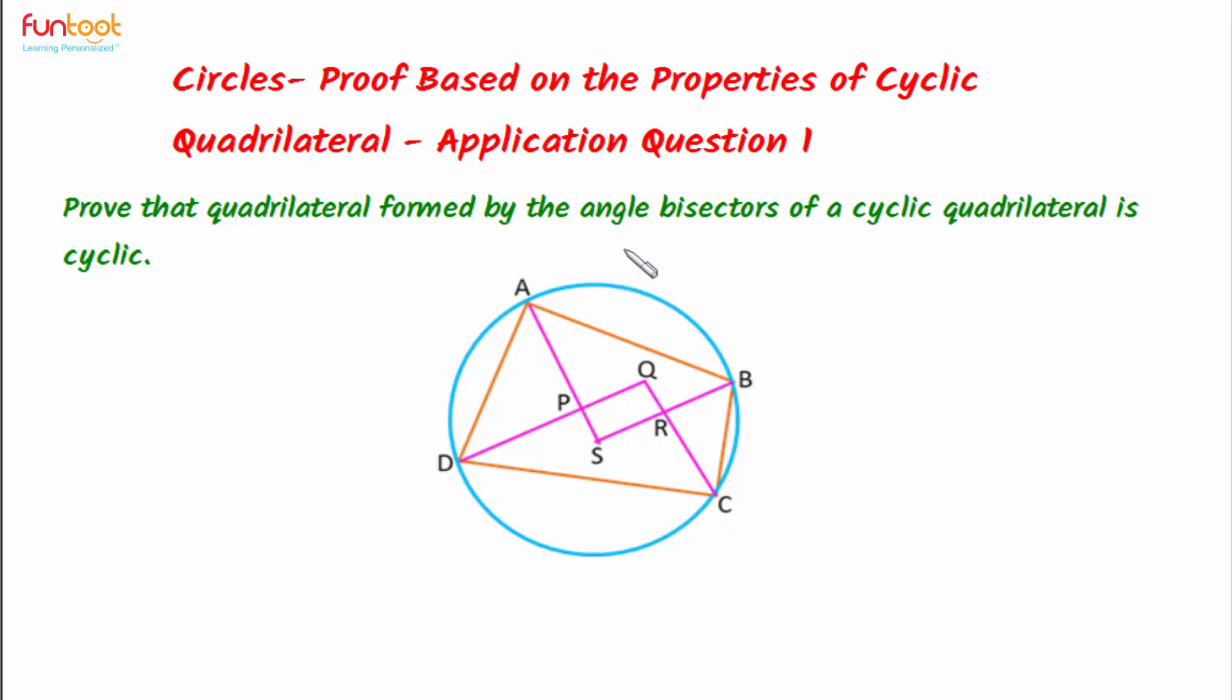Let's do a problem. Here we have to prove that quadrilateral formed by angle bisectors of a cyclic quadrilateral is also cyclic.